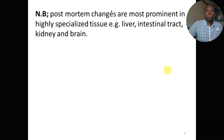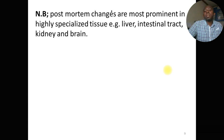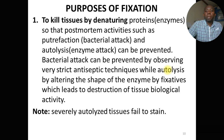Post-mortem changes are most prominent in highly specialized tissues like the liver, intestinal tract, kidney, and brain. In these highly active organs, putrefaction and autolysis take place very quickly following death.